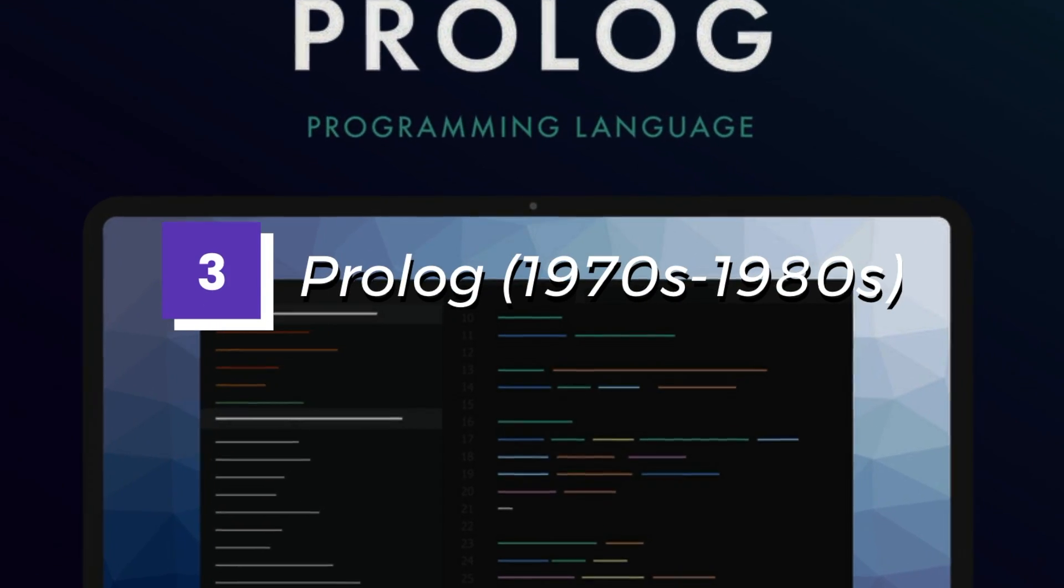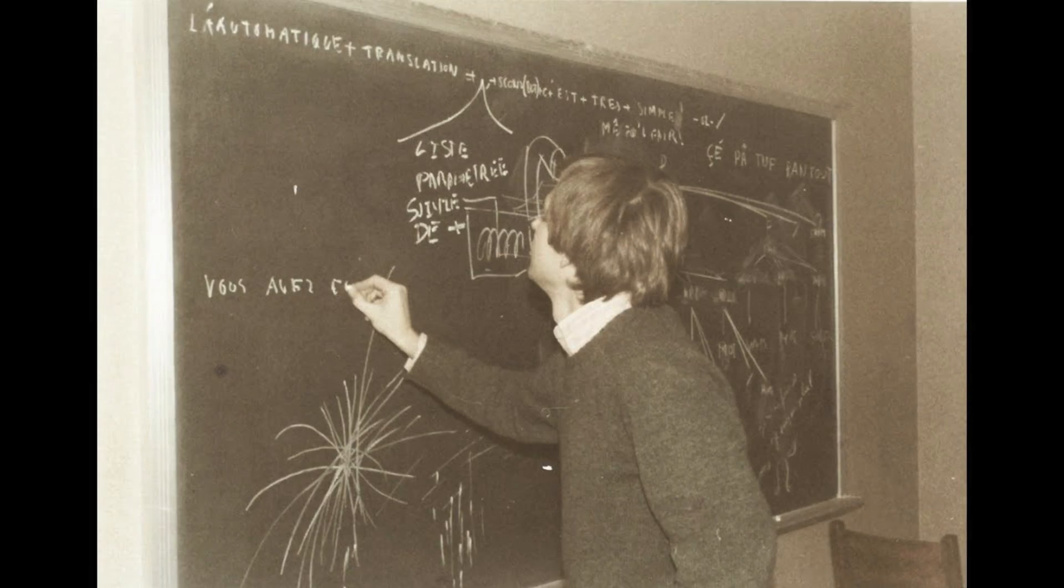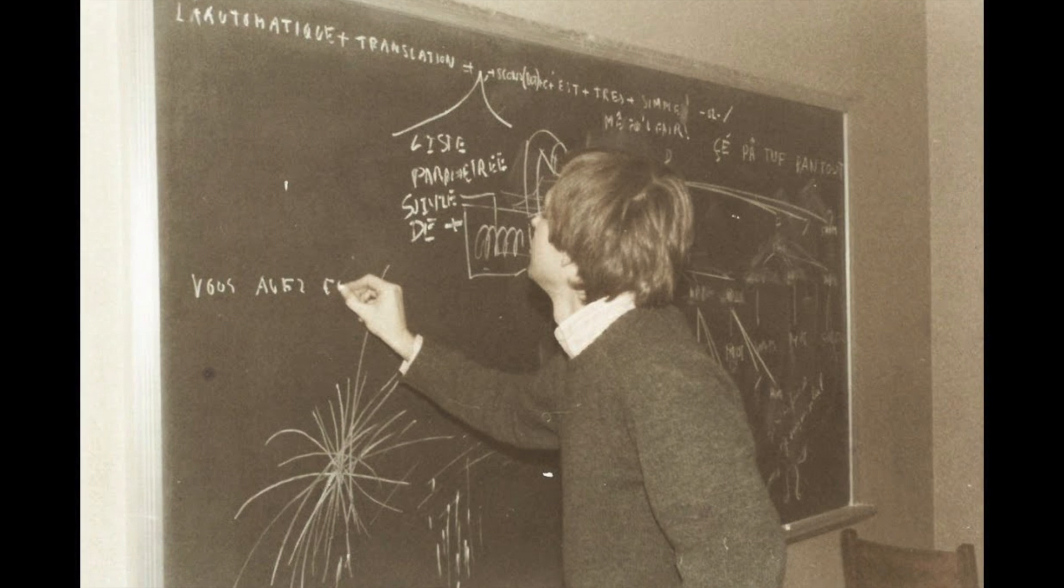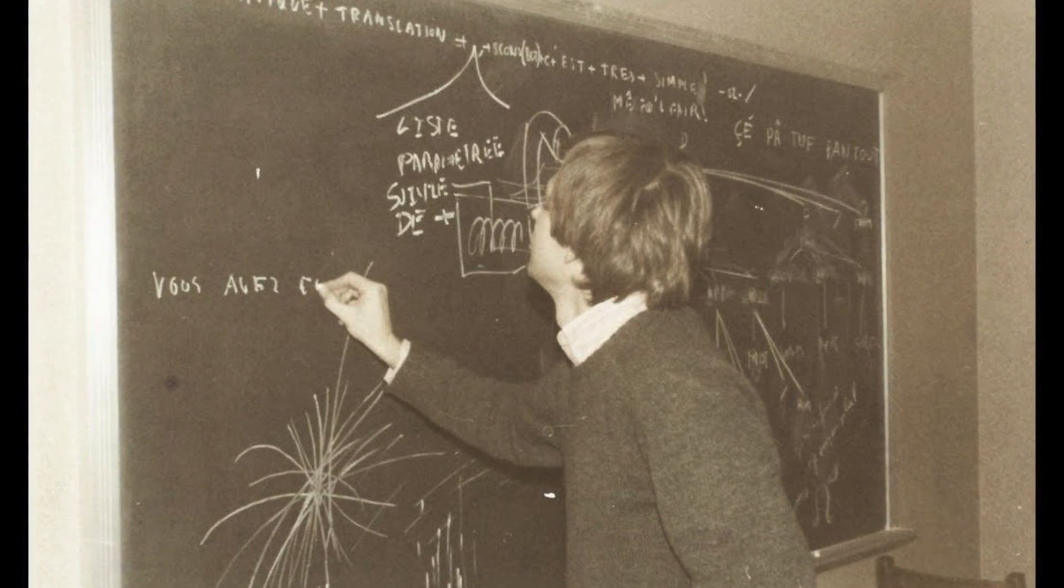Number 3. Prolog. Prolog, which stands for programming and logic, is a high-level programming language that was first developed in the 1970s. It was invented by Alain Colmerauer and Philippe Roussel, and was designed to be a language for artificial intelligence and symbolic computing.